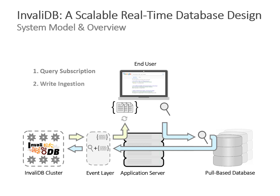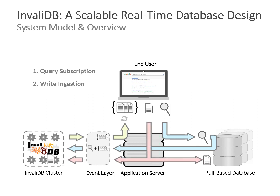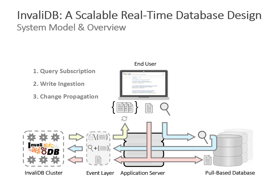We have a distributed cluster of nodes that registers state, and when everything is ready, it sends out the initial result to the end user as confirmation that the subscription is ready. Whenever something gets written — by another user, another process, the same app server, or a different one — the write operation is applied to the database and also given to the InvalidDB cluster, where it is checked against all currently active real-time queries, and change data deltas are sent out if there are any.